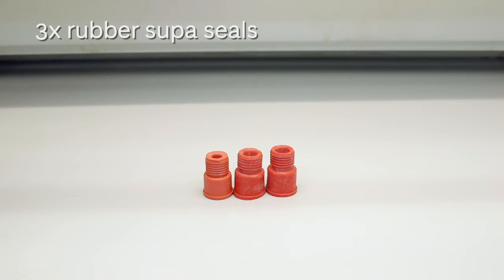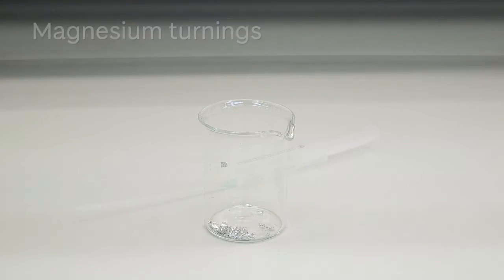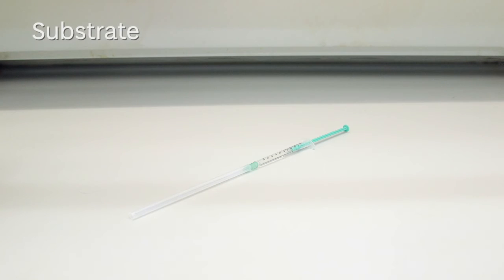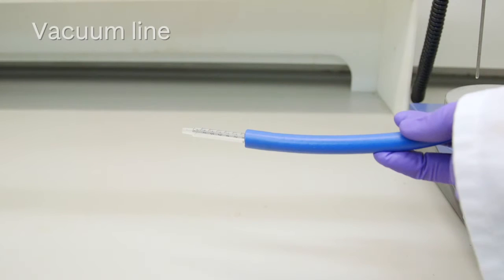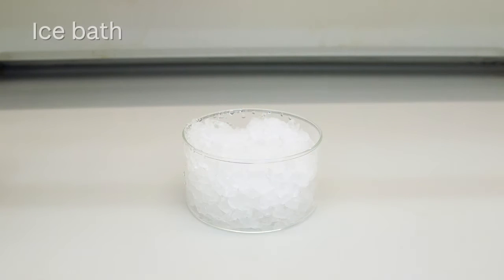Three rubber septa, magnesium turnings, a solvent which can be either THF or diethyl ether, your substrate, a vacuum line, a balloon filled with nitrogen gas, and an ice bath.